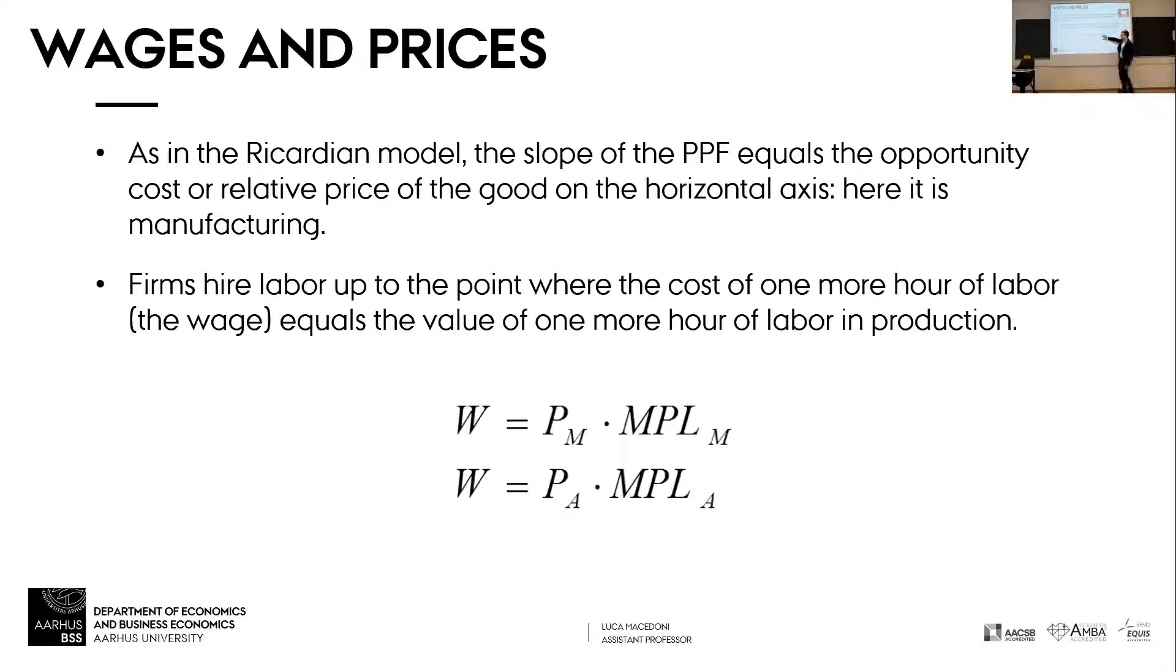These are the wage formulas. The wage equals the value of the marginal product of labor. So the wage in manufacturing is the price of the manufacturing good times the marginal product of labor. Same thing for agriculture. And since workers can move, as long as you're producing both goods, then the wage has to be the same across sectors.